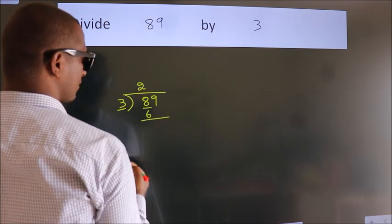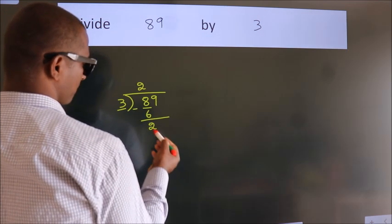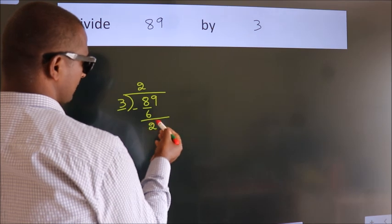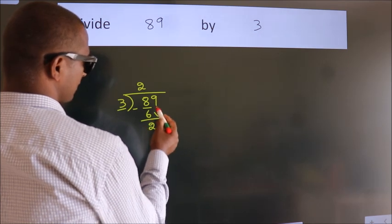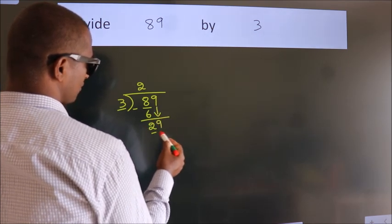Now, we should subtract, we get 2. After this, bring down the next number. So, 9 down. So, 29.